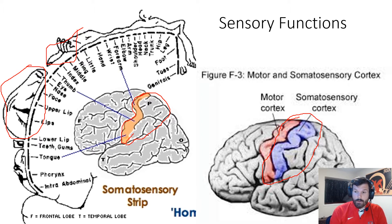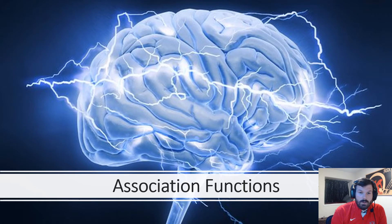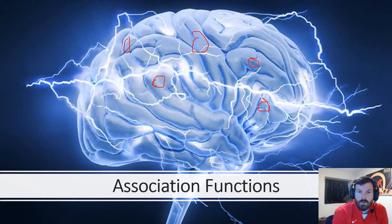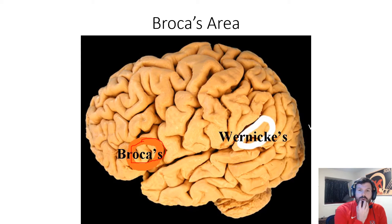Next are the association areas — parts of the cerebral cortex involved in very specific higher functions. Individual spots in your brain do very specific things. We're going to talk about two of them. The first is Broca's area, which is in the left hemisphere of the brain, in the frontal lobe.